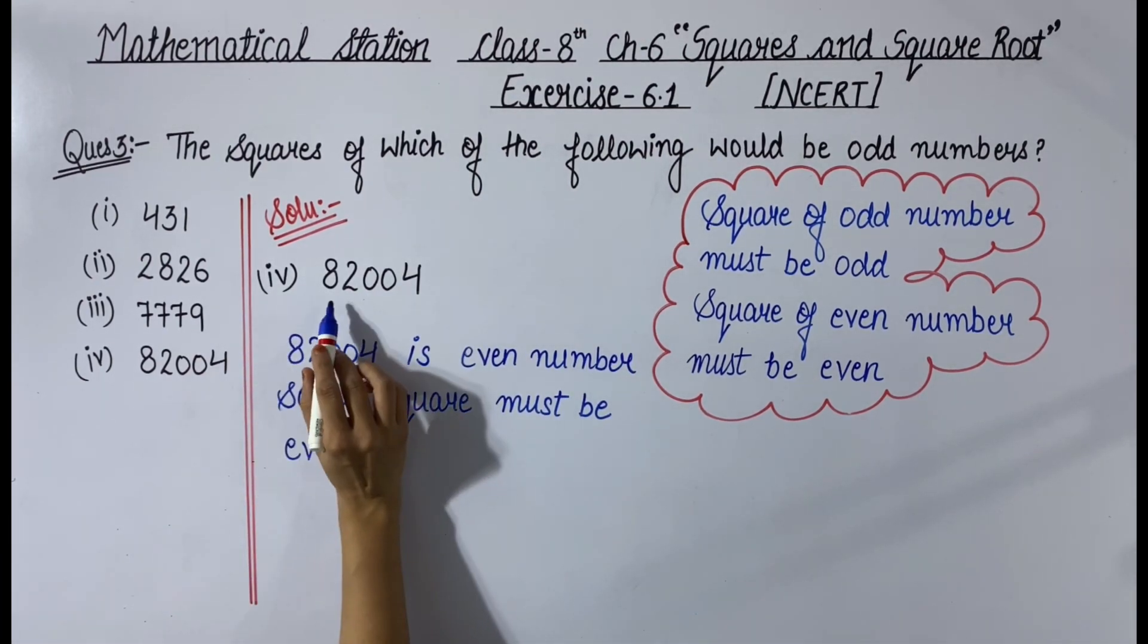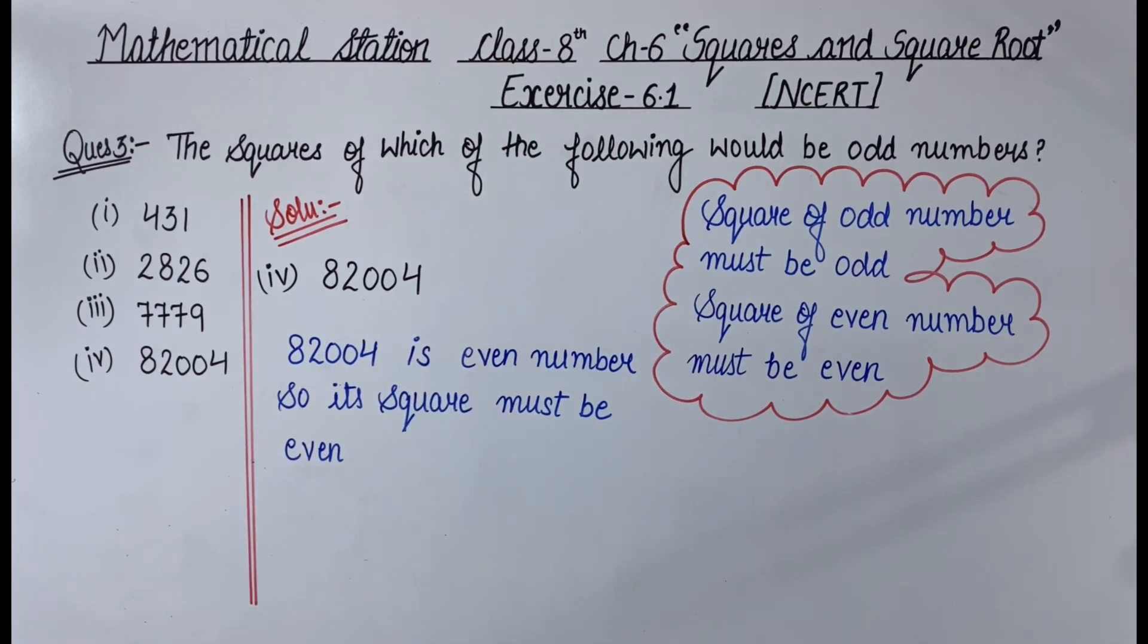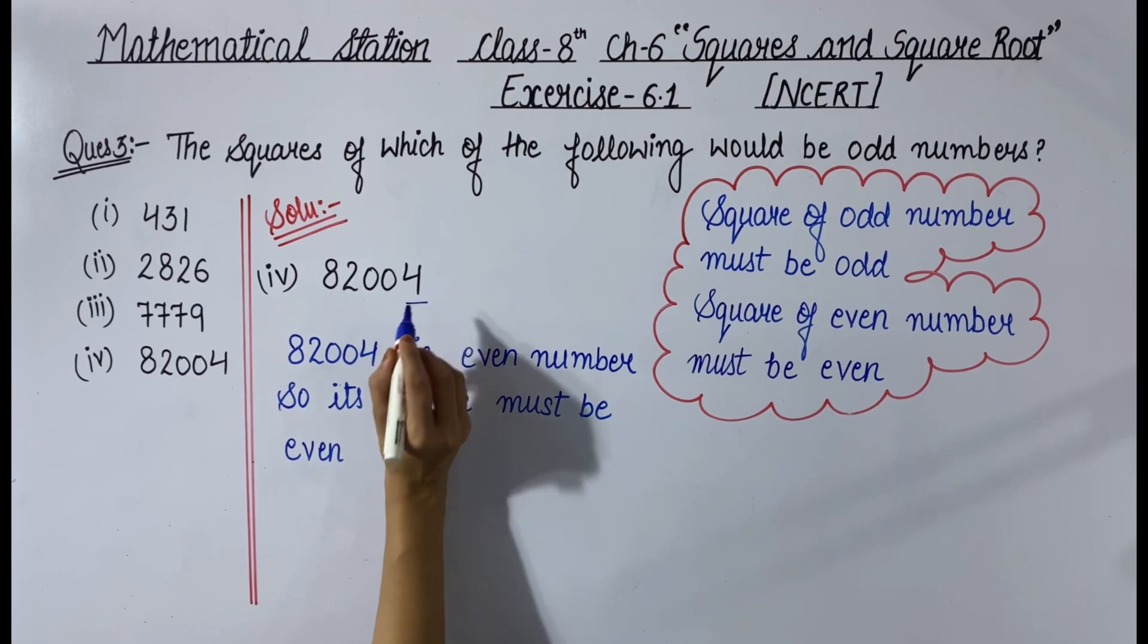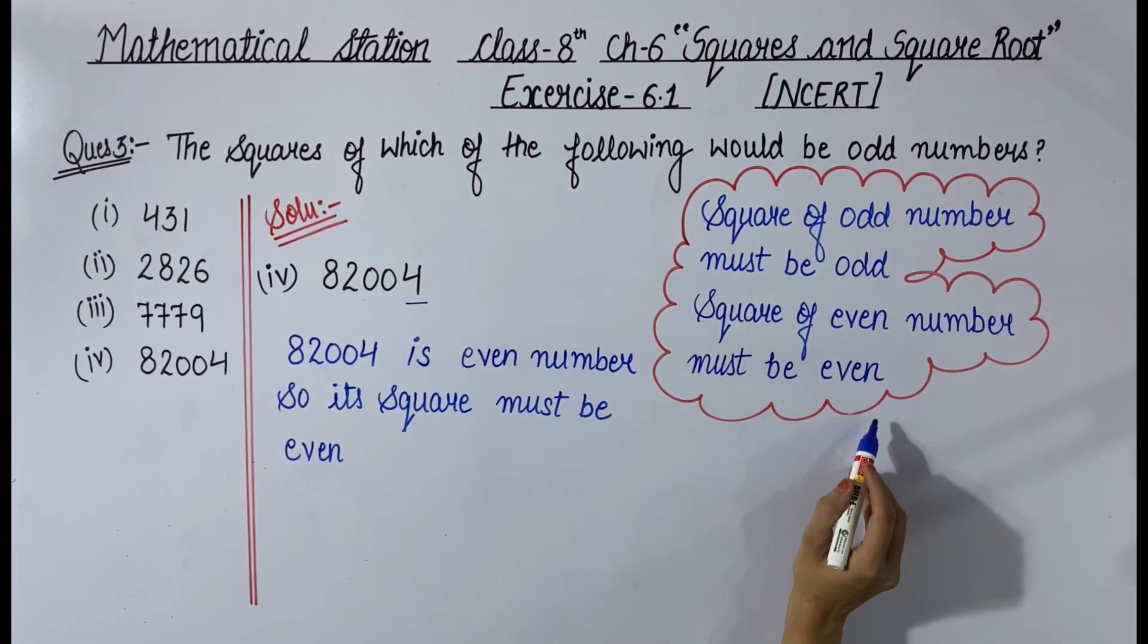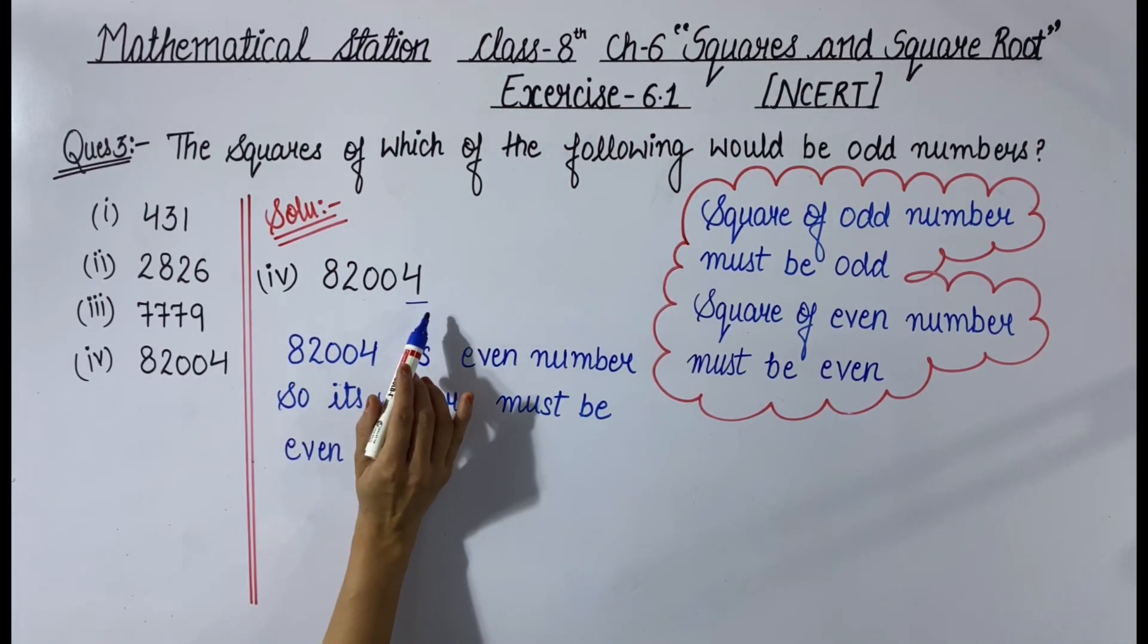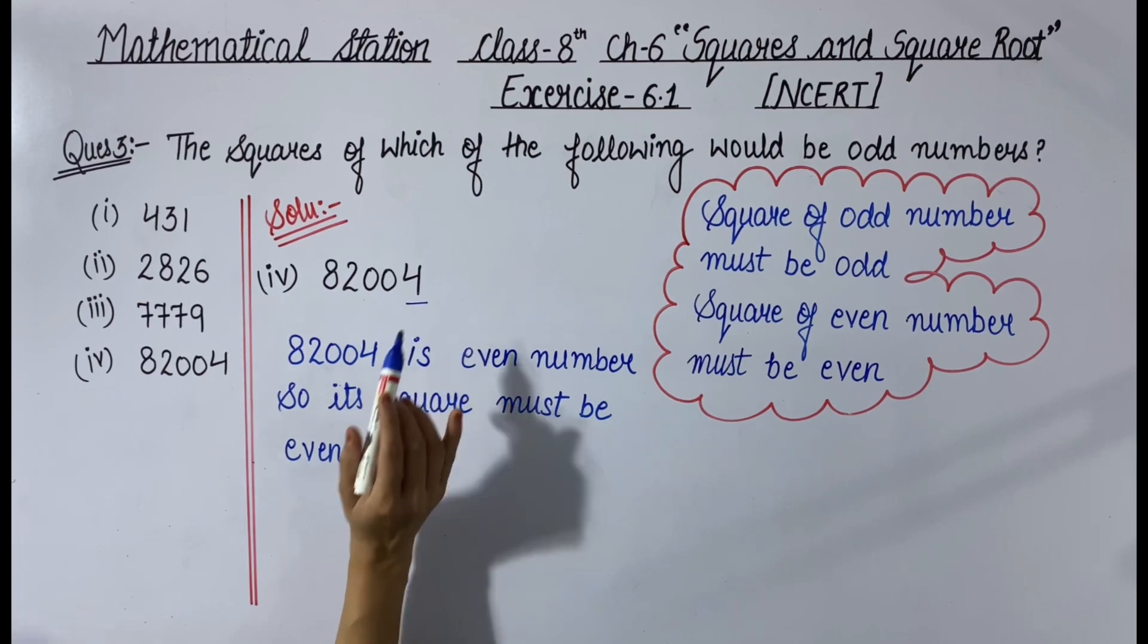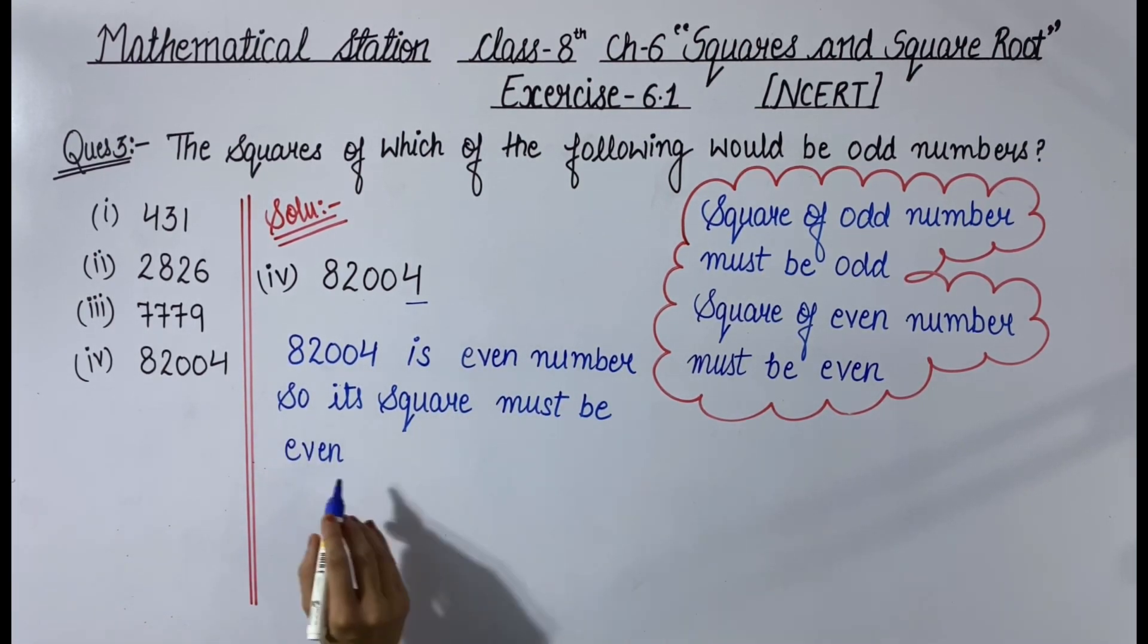And last, the fourth one is 82004. To determine if a number is odd or even, we check the unit digit. Here the unit digit is 4, which is even, so this number is even. We know that an even number's square is even. So 82004 is even, therefore its square must be even. Clear?